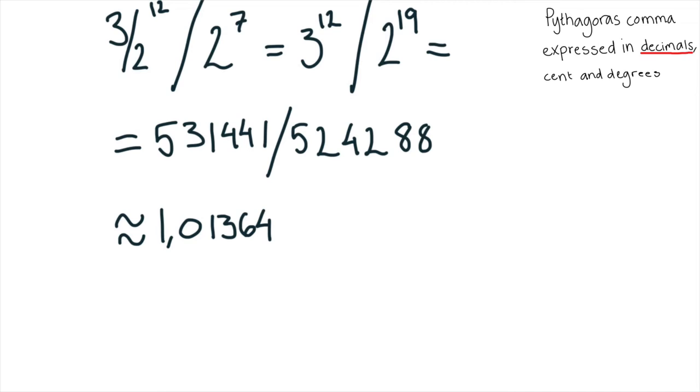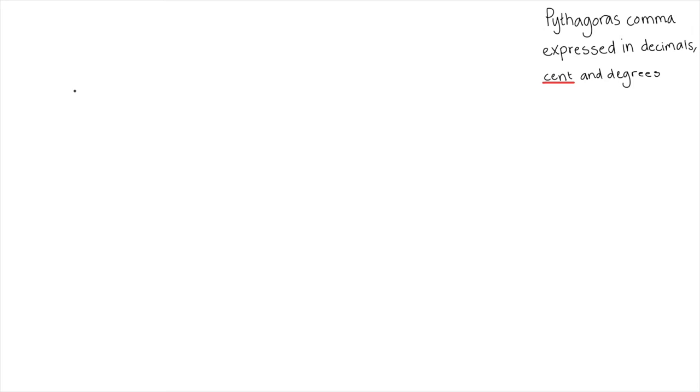And if you want to write it in an easy way, you could write it in cents. But first you have to know that an octave has 1,200 cents. So 1,200 times logarithm 2, 531,441 with 524,288, which becomes 24 cents.